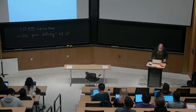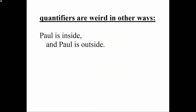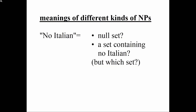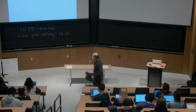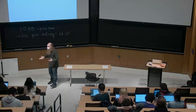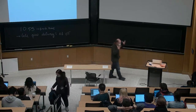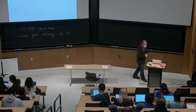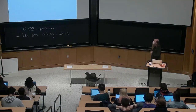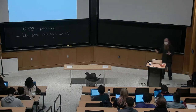Quantifiers are expressions that do more interesting things with set interaction than just saying this set is a subset of that set. A popular way of talking about them: they allow you to make different assertions about the relation between two sets. 'No' makes you have the sets interact in a different way — it says nothing in the first set is contained in the second set. That's what they're for.